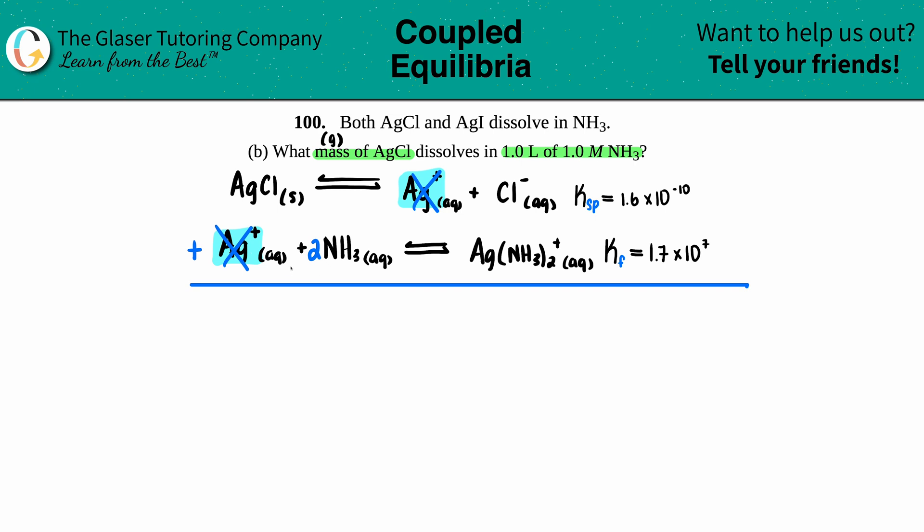I'm bringing the two equations together: AgCl solid plus 2NH3 aqueous yields Ag(NH3)2+ plus Cl- aqueous. When you're adding your two equations, we do not add the Ksps and K values—you always multiply these values.